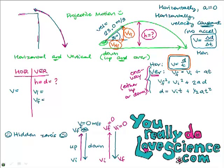Back to the problem. I'm going to fill in a hidden zero in my horizontal-vertical table. I'll choose to work on the way up. Since I'm choosing the way up, my final velocity is the hidden zero — at the tippy top it stops vertically for a split second. It keeps going horizontally, but vertically at the tippy top it's no longer rising.